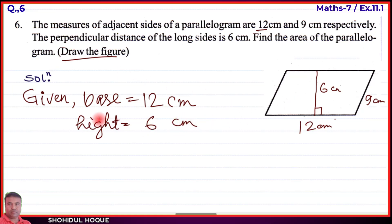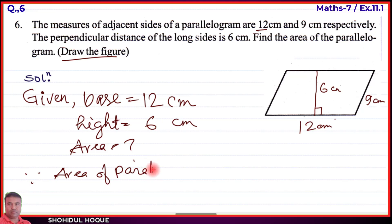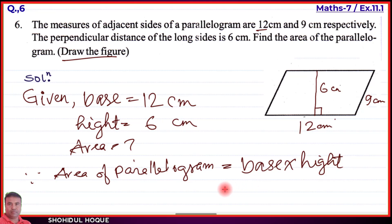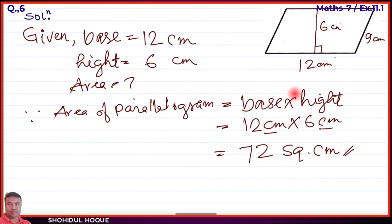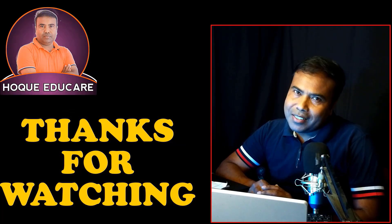Since area of parallelogram equals base into height, substituting: base = 12 cm, height = 6 cm. So area = 12 × 6 = 72 square centimeters. Question number 5 and 6 are now solved. See you in the next video. Thank you.